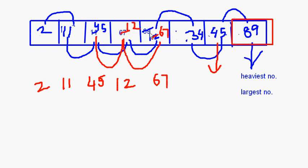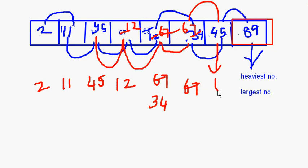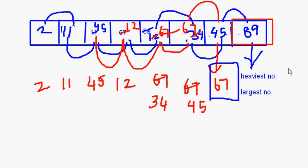Then 67 will be compared with 34: this becomes 34 and this becomes 67. Then 67 and 45: 67 moves here and 45 comes here. After this pass, we can see that 67, the second largest number, has come to the end. 89, the largest, was already there.